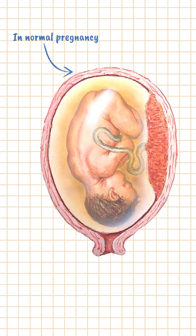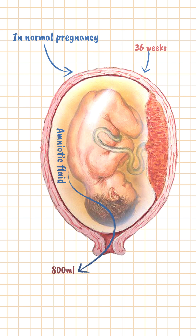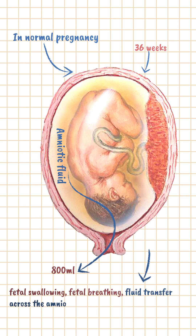In a normal pregnancy, at around the 34 to 36-week mark, amniotic fluid volume is usually about 800 milliliters. This fluid is actually a reflection of a few things: fetal swallowing, fetal breathing, fluid transfer across the amniotic sac, and especially fetal urination.